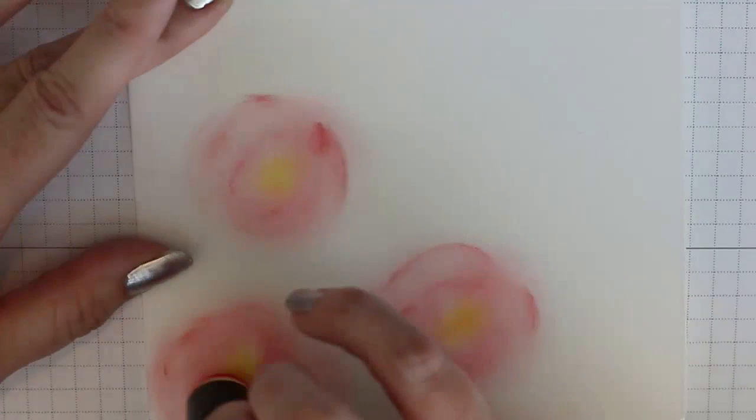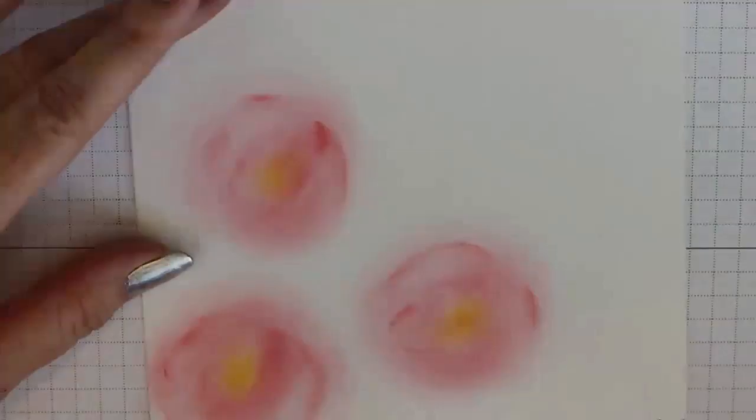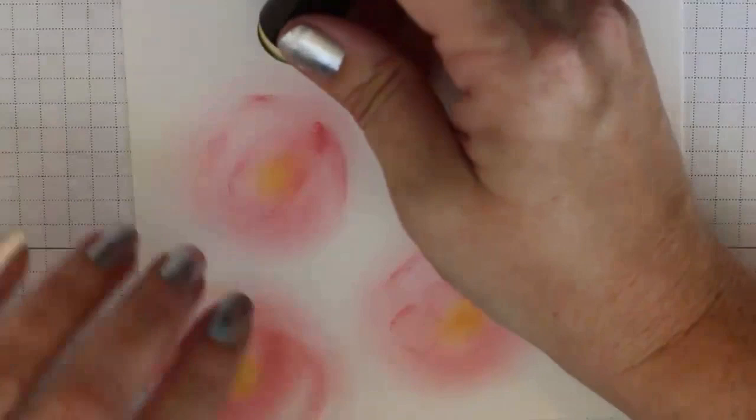Now if you use the edge of your dauber, it has a little more ink on it, and you can get a little line, which is what I'm doing here, to sort of give a hint of rose petals inside the roses, just to add a little bit of detail since these are so blurry and fuzzy.